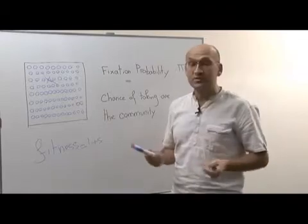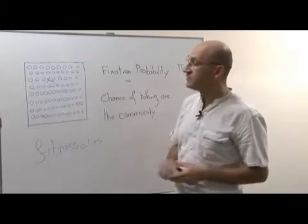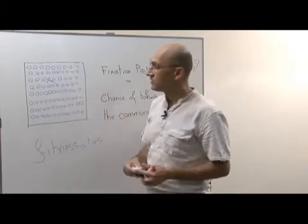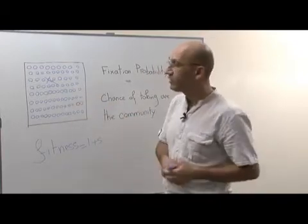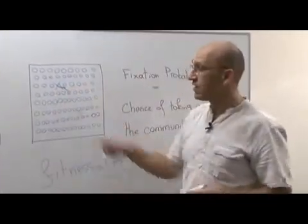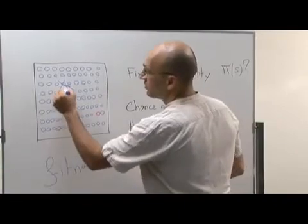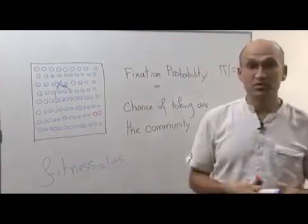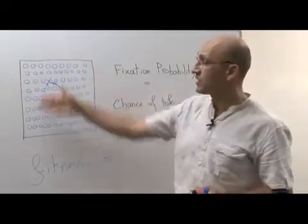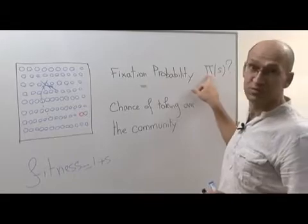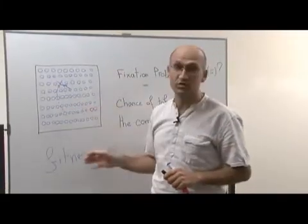However, this is too simple. In fact, if you consider individuals which are spread into space, when one individual like this one dies, it has a far better chance of getting replaced by one individual which is close by than by one individual which is much further away. So the problem we want to tackle now is how to take into account the migration patterns to compute the fixation probability.